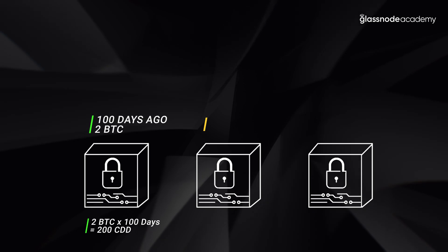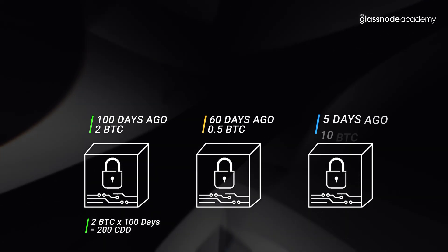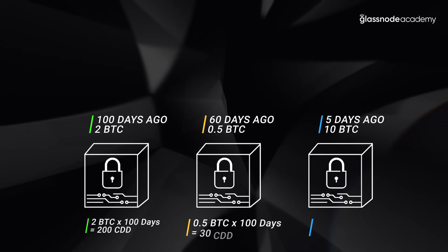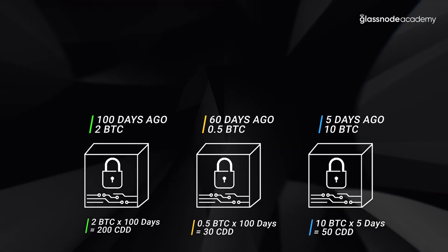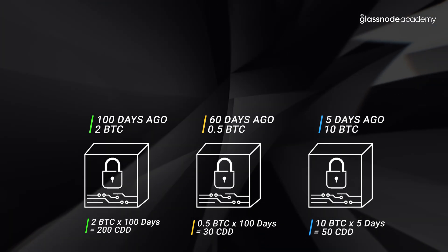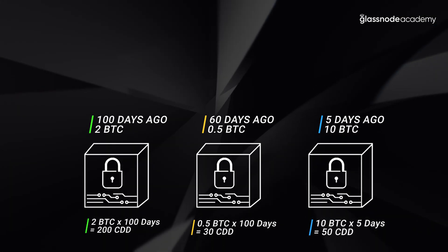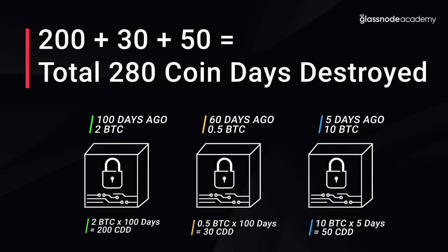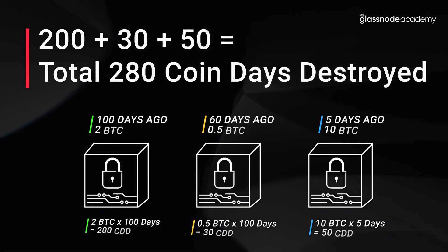Similarly, Bob has half a Bitcoin at 60 days age, so you've got 30 Coin Days. And Carol's got 10 BTC at five days, which gives us 50 Coin Days. If all of these outputs happen to be spent on the same day, we would sum them up and say that 280 Coin Days have been destroyed on that particular day.